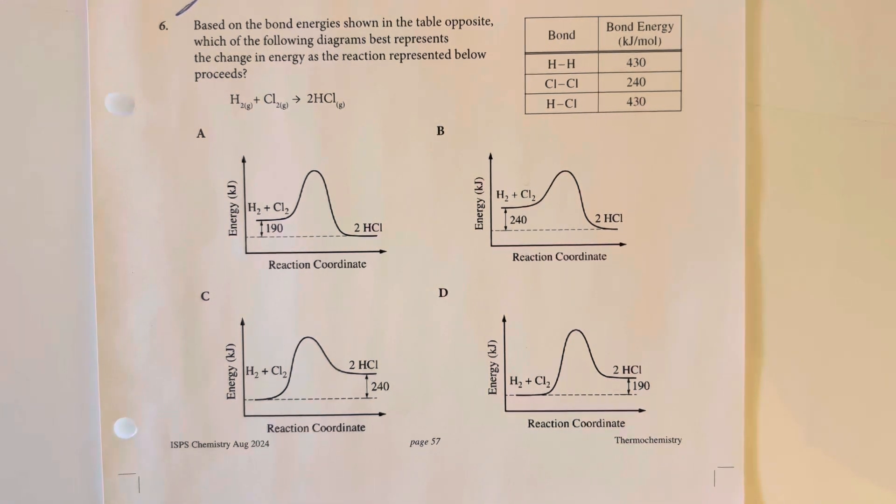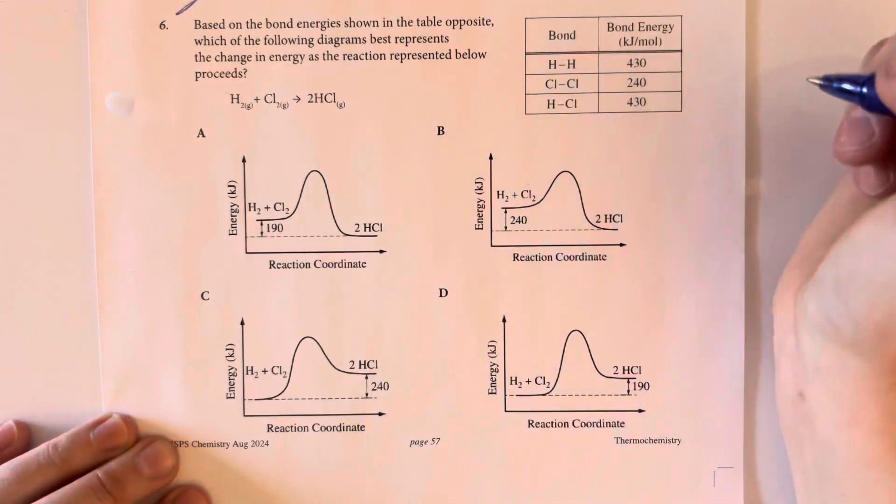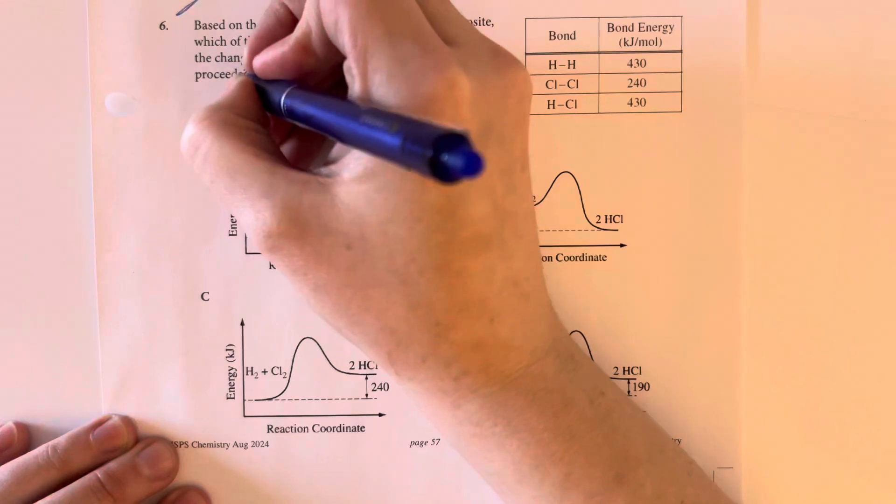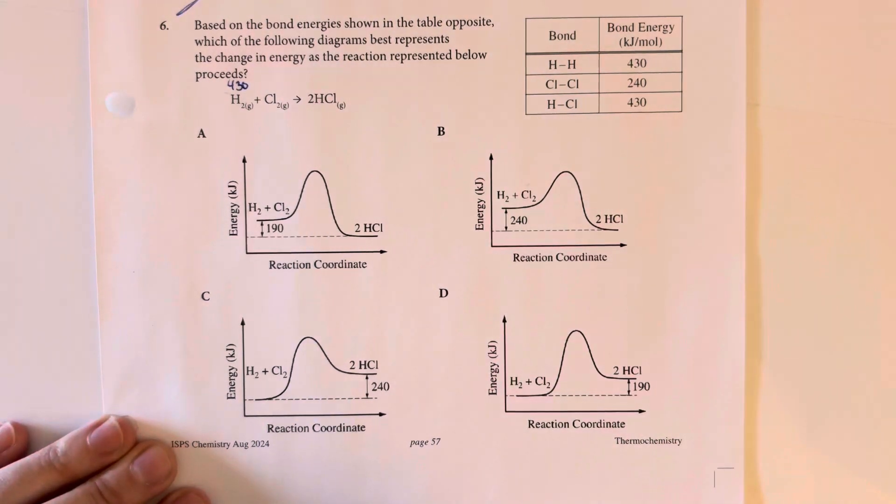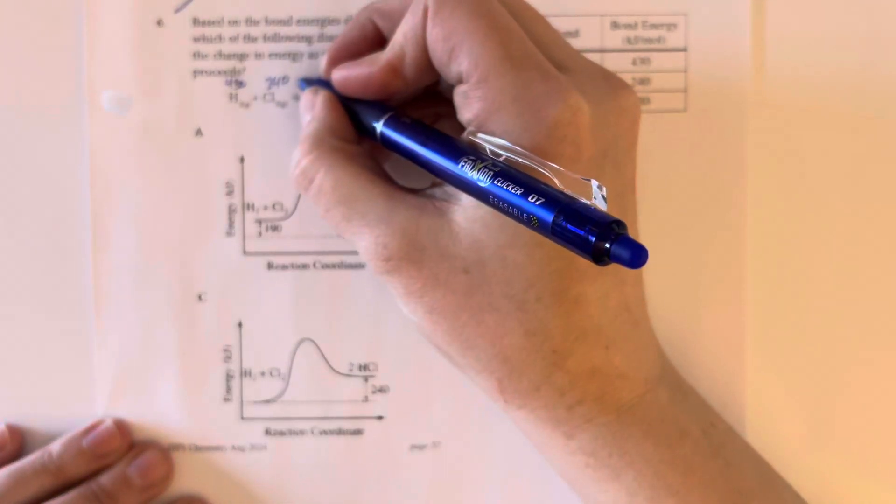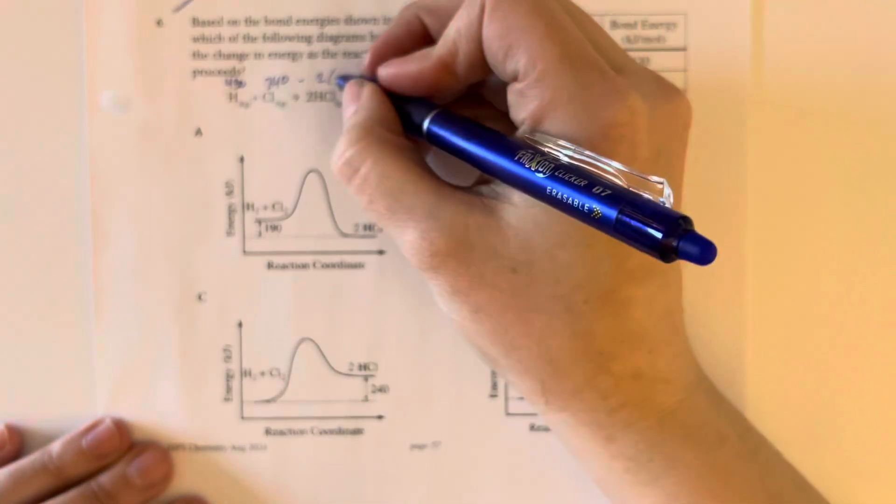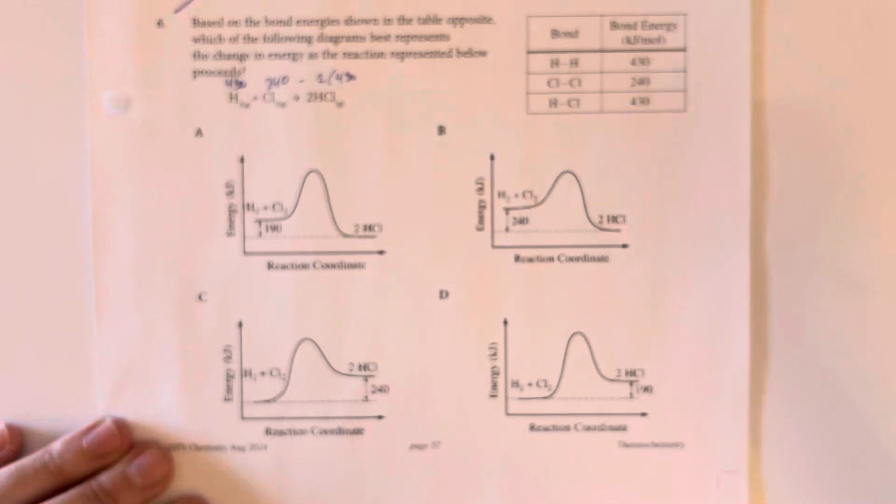Based on the bond energy shown in the table opposite, which of the following diagrams best represents the change in energy as the reaction represented below proceeds? Hydrogen to hydrogen, we have a bond enthalpy of 430. Then chlorine to chlorine, we have 240. And then we have two 430s.